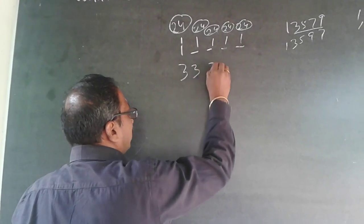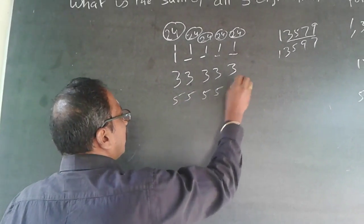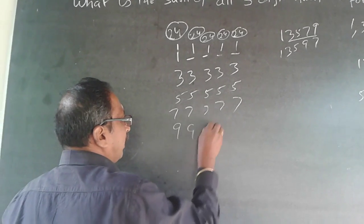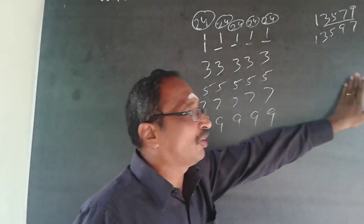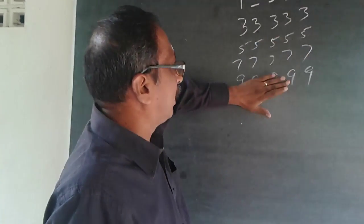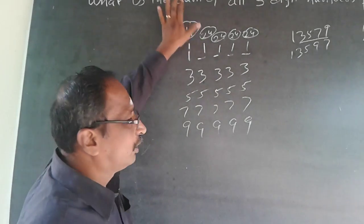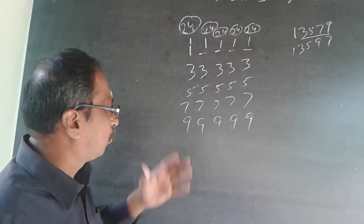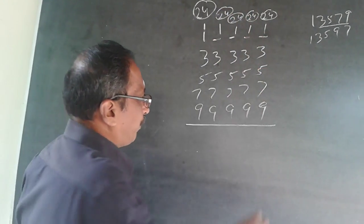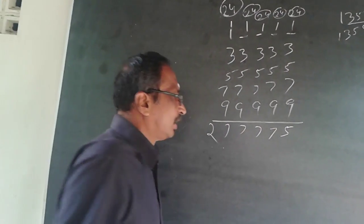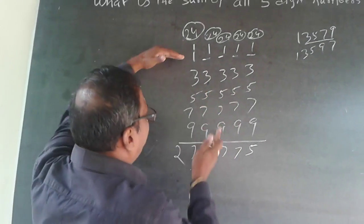So you form the numbers 11111, 33333, 55555, 77777, and 99999. Instead of dealing with 120 numbers, you now have just five numbers. Total all five and multiply by 24, because each digit occupies every place 24 times. That gives you the final answer.